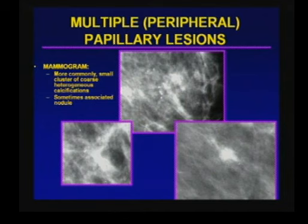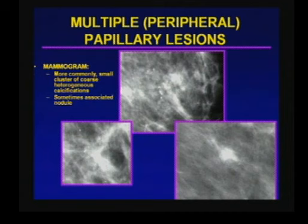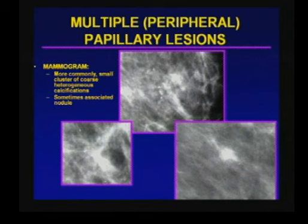However, that classic finding is not what we often see. More commonly we encounter just a small focus of coarse heterogeneous calcifications, sometimes associated with a nodule, and this is more difficult to interpret as a peripheral papilloma. For example, all three of these images are from three different patients who underwent core biopsy with a result of benign papilloma — yet on excision the results differed: one was a benign papilloma, one was a papilloma with atypia, and one was papillary DCIS. All of these patients are placed in the BI-RADS IV category and undergo biopsy.